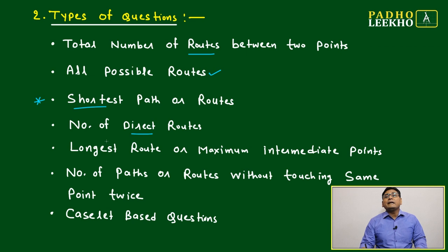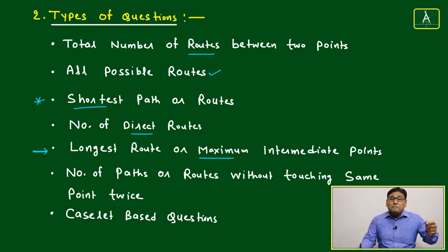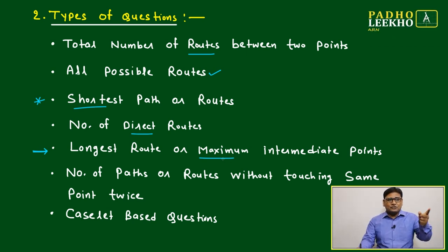The number of direct route, number of indirect route, number of intermediaries coming in between. Longest route, that is another, you can say just reverse way of asking shortest route, or we can say maximum intermediate points, or just opposite of that, minimum intermediate points. That is shortest path.